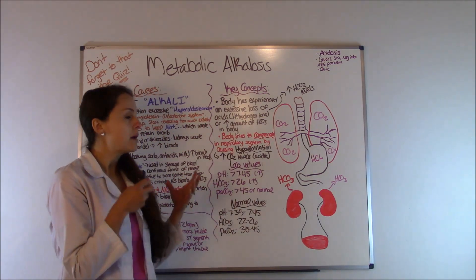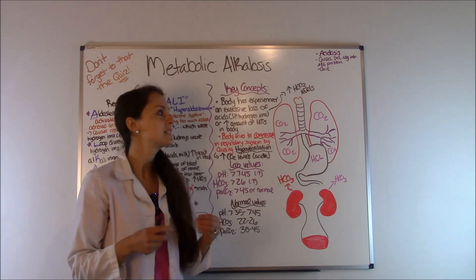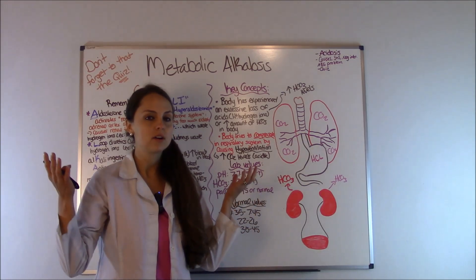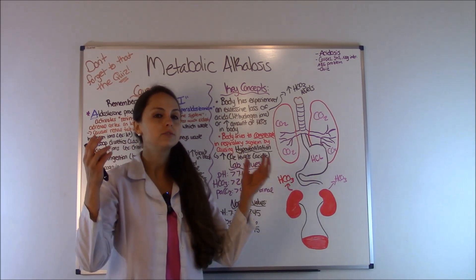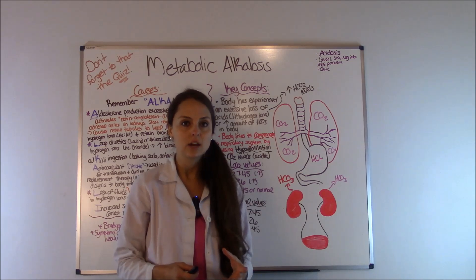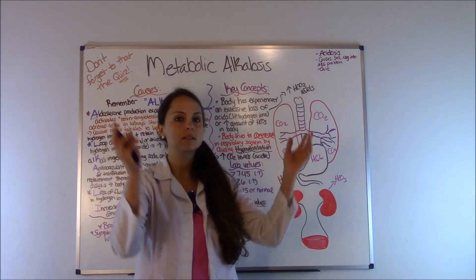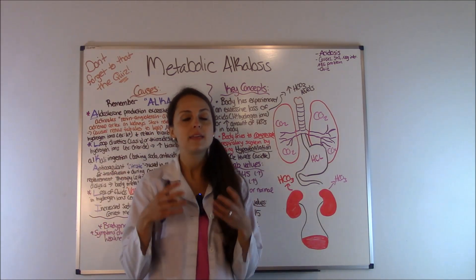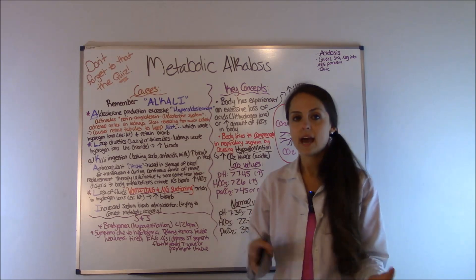Metabolic alkalosis occurs because the body has experienced an excessive loss of hydrogen ions — acids. When the body loses all those acids and hydrogen ions, the bicarb increases. Whenever you're losing acid, bicarb goes up. This is the opposite of acidosis, where you're losing bicarb and acids go up, causing bicarb to go down. Or the body can also have increased production of bicarb itself.